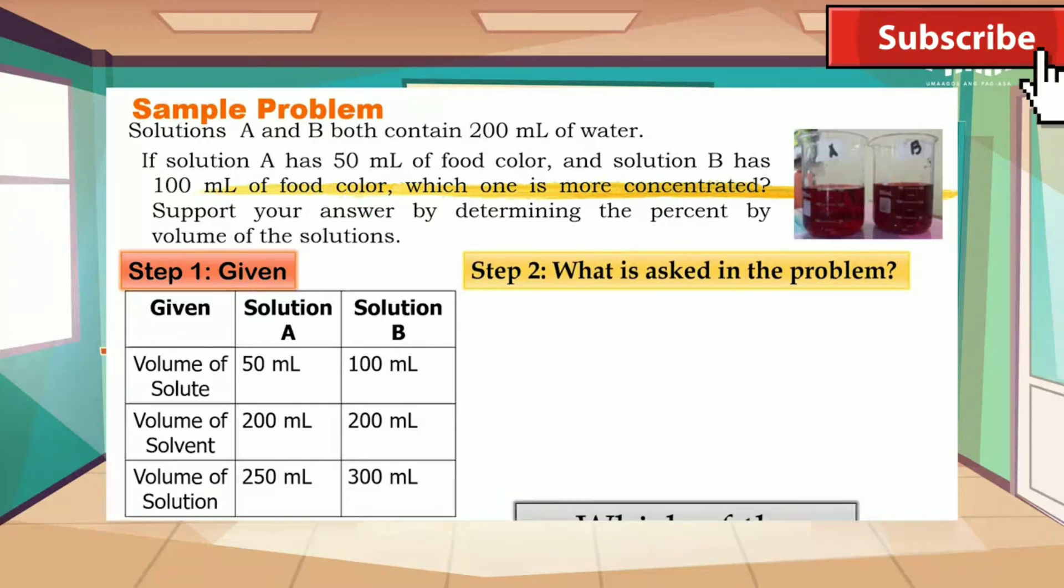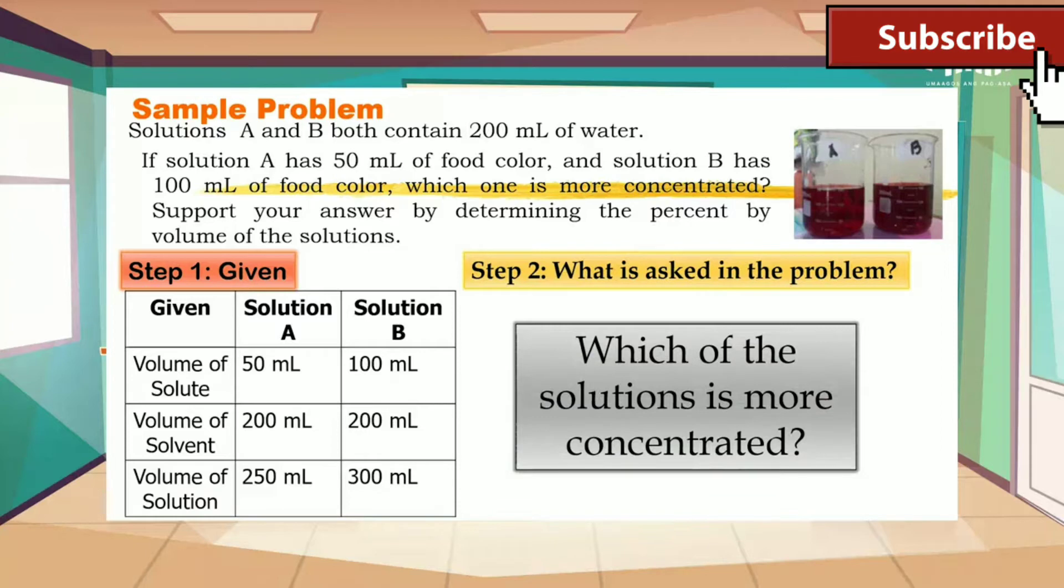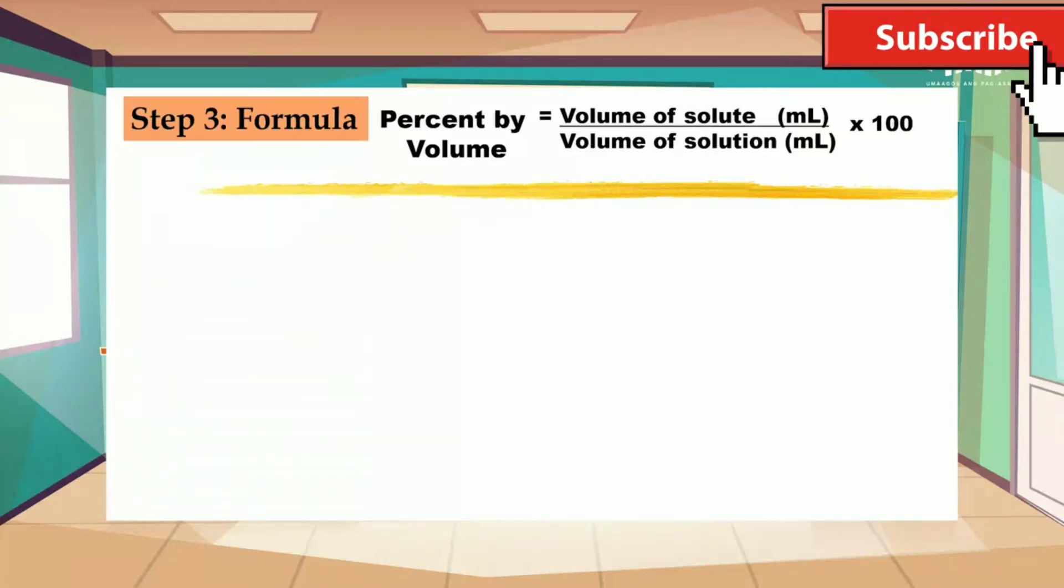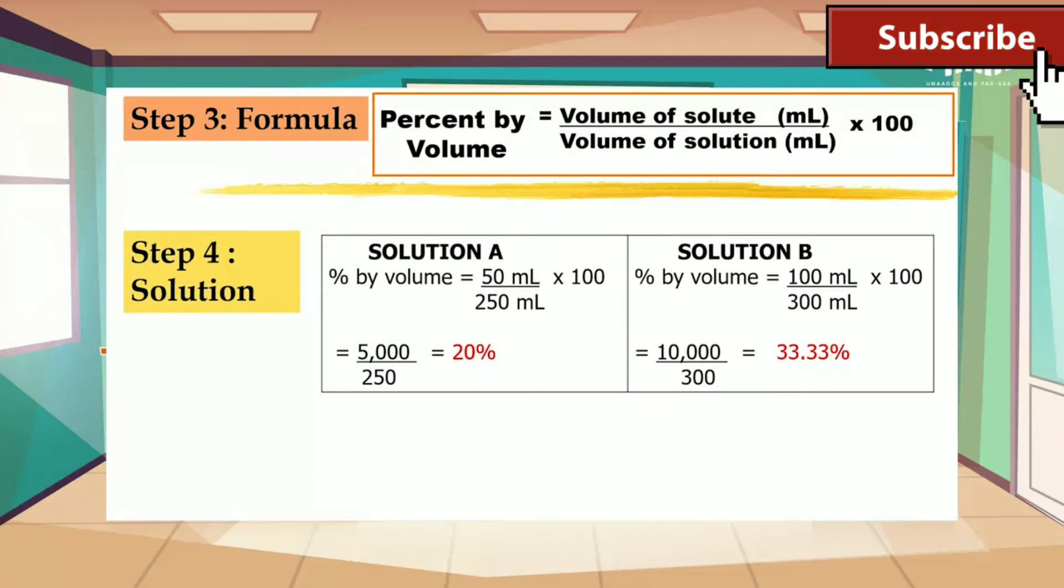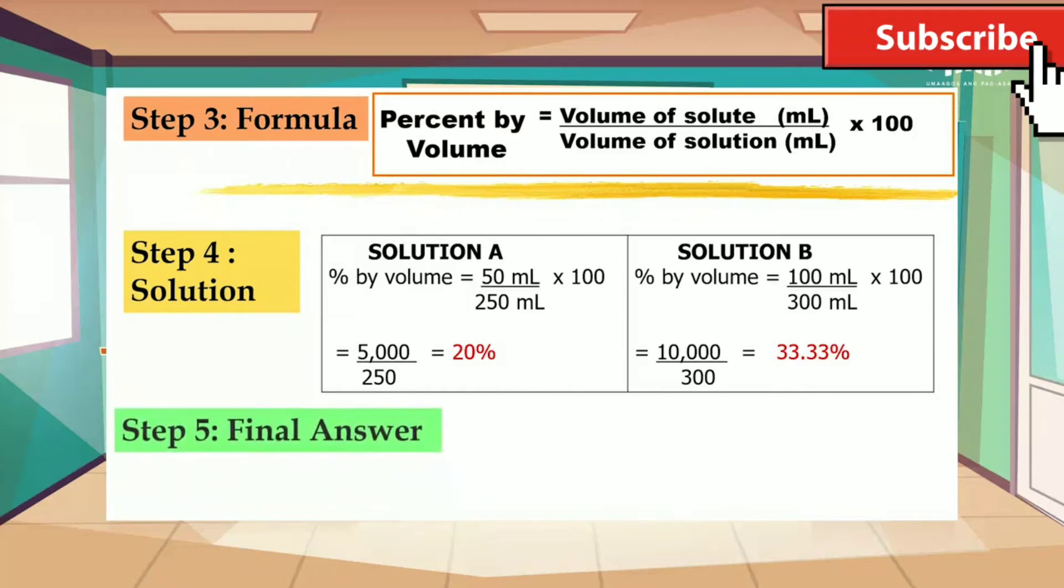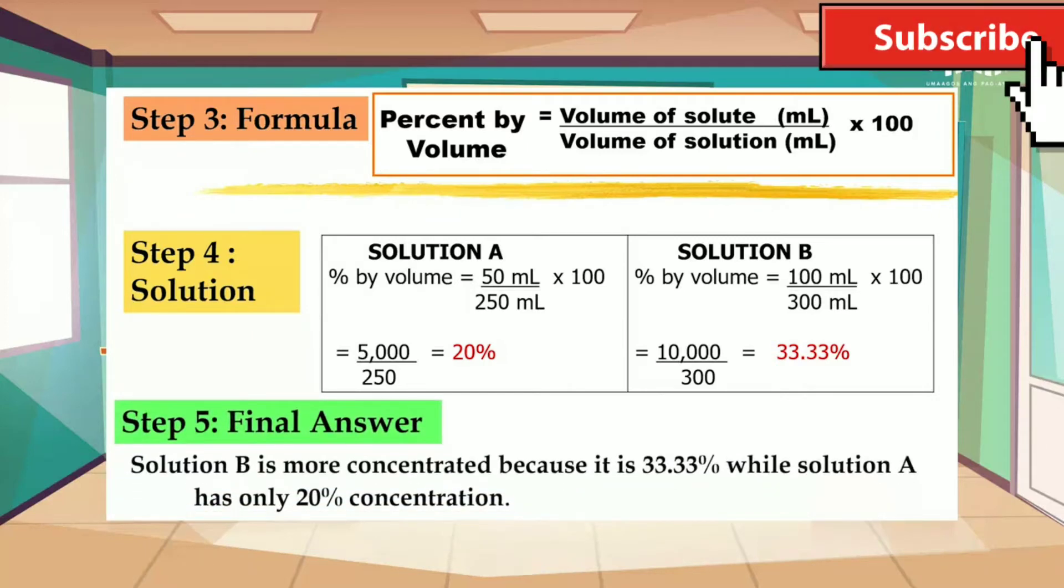Step two, we are asked to determine which of the solutions is more concentrated. Step three, we have the formula in order to solve for the percent by volume. Step four, we have to substitute the value of the formula. After substitution and mathematical operations, we found out that in solution A, the concentration is 20%, while that in solution B, the concentration is 33.33%. Therefore, our final answer: solution B is more concentrated because it is 33.33%, while solution A has only 20% concentration. Understand?